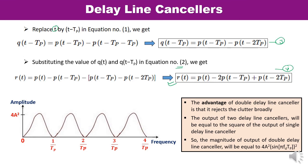The frequency response of the double delay line canceler has a maximum amplitude of 4A² and becomes 0 at fp, 2fp, 3fp, and 4fp. The advantage of the double delay line canceler is that it rejects clutter more broadly. The output of the two delay line cancelers is equal to the square of the output of the single delay line canceler. The magnitude of the output of the double delay line canceler is equal to 4A²·sin²(π·Fd·tp). This is how you can design various delay line cancelers. Thank you so much for watching this video.